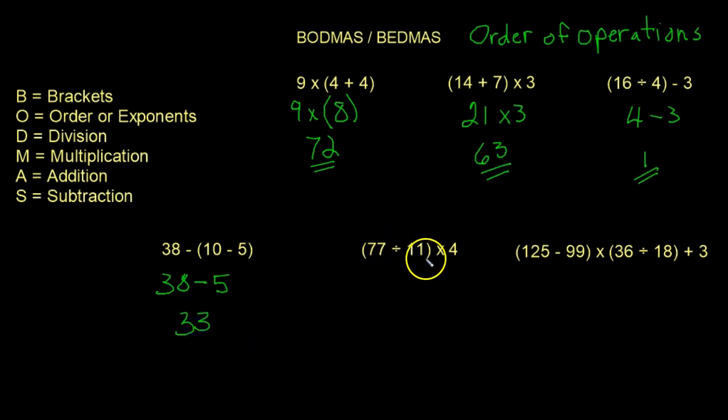Okay, 77 divided by 11. Again, it's in brackets, we have to do this first. But you'll notice over here that even if there weren't brackets, because it's division, you would do that before any of the other actions. Any of the other operations.